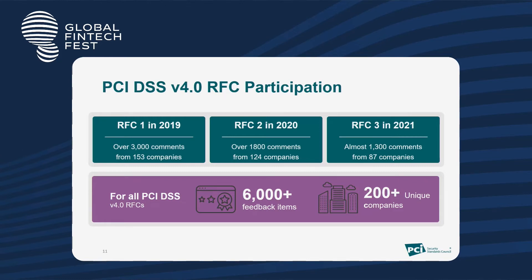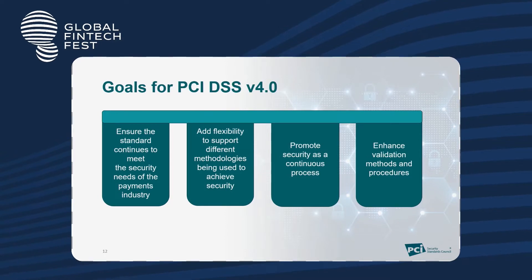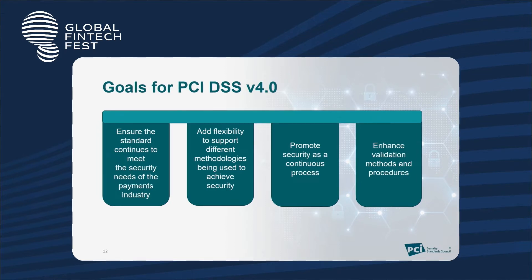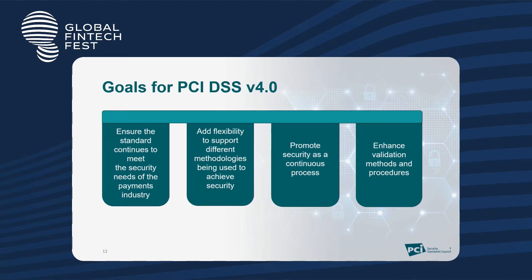This massive global feedback helped us evolve and make PCI DSS version 4.0 more robust. The four goals we considered are: ensuring the standard continues to meet the security needs of the payment industry, adding flexibility, promoting security as a continuous process, and enhancing validation methods and procedures. The validation methods have evolved — initially it was just a defined approach, but now we have also come up with a customized approach, which I will discuss in the next few slides.